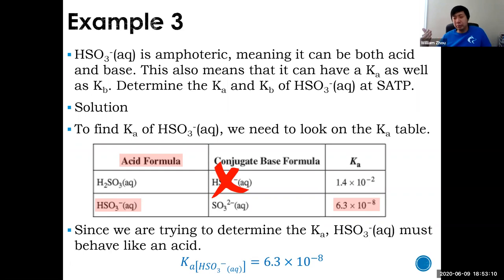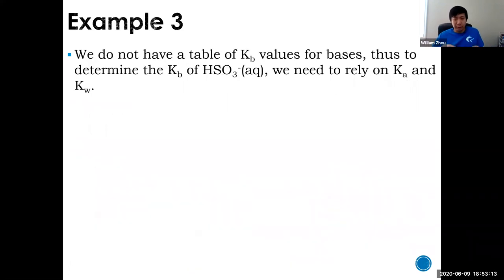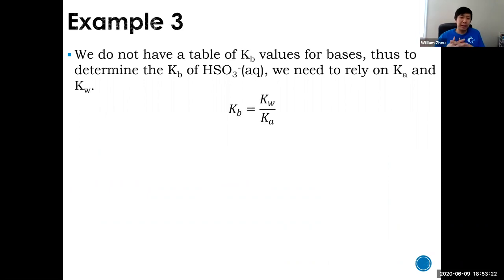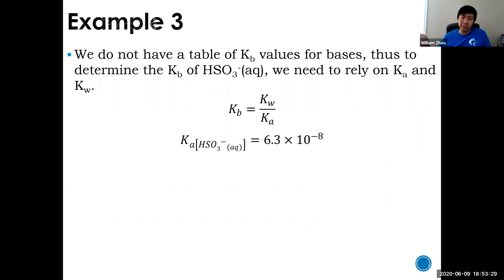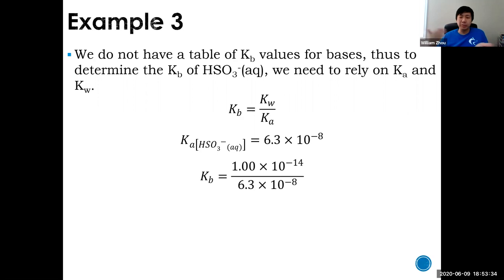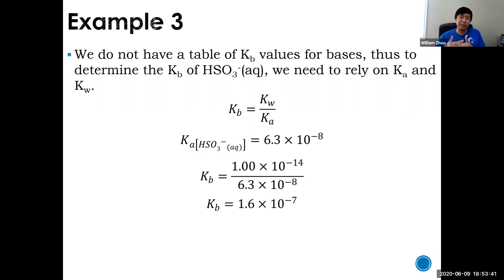It gets tricky when solving for Kb. You don't have a Kb table because you can calculate Kb from Ka. Remember the formula Ka × Kb = Kw. The Ka we just found is 6.3×10⁻⁸, and Kw is the constant, so dividing: Kb equals 1.6×10⁻⁷.